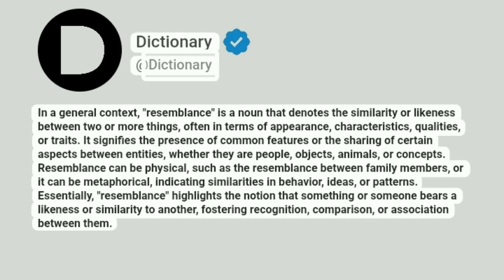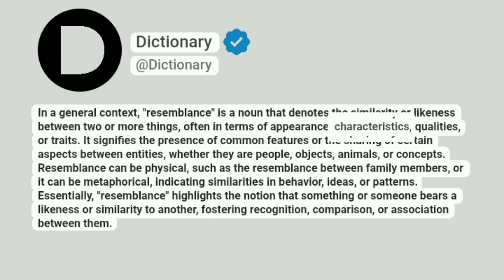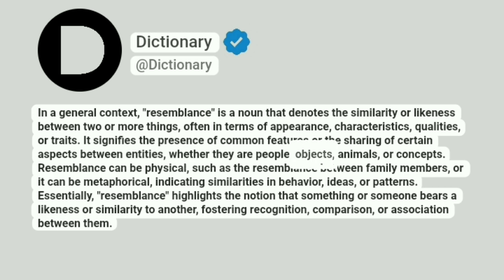Dictionary. At Dictionary. In a general context, resemblance is a noun that denotes the similarity or likeness between two or more things, often in terms of appearance, characteristics, qualities, or traits. It signifies the presence of common features or the sharing of certain aspects between entities, whether they are people, objects, animals, or concepts.